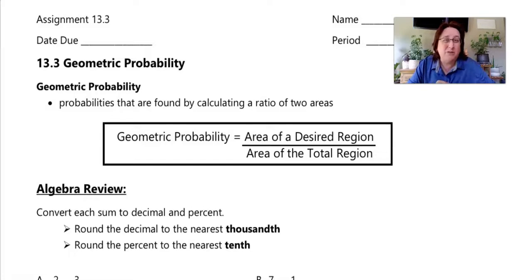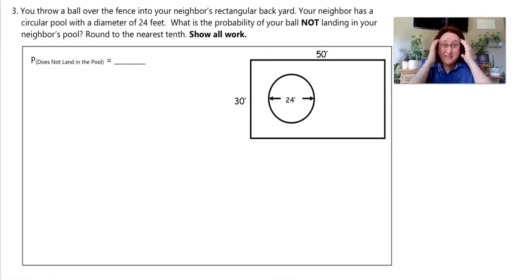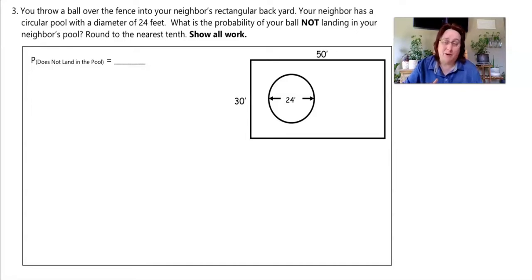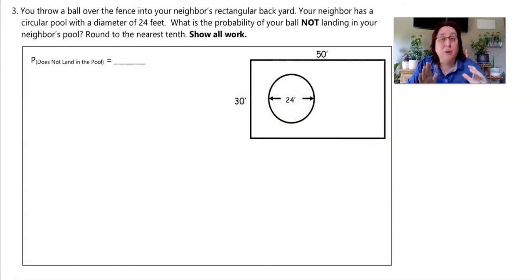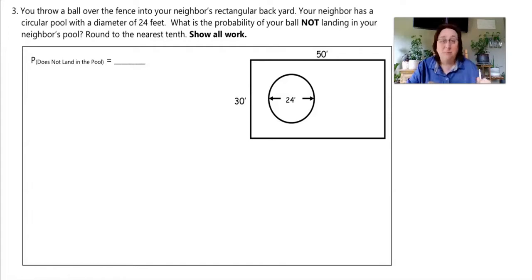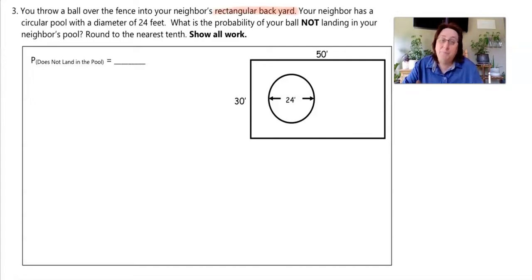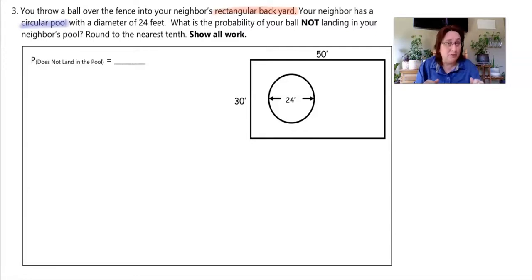Let's work out problem number three together. This is a real-life problem: you throw a ball over your fence into your neighbor's rectangular backyard — I've actually done this before with a football. Your neighbor has a circular pool with a diameter of 24 feet, and we want to calculate the probability that the ball did not land in the pool. Key words here: rectangular backyard tells us the shape of the entire figure, and circular pool tells us the shape of the pool.